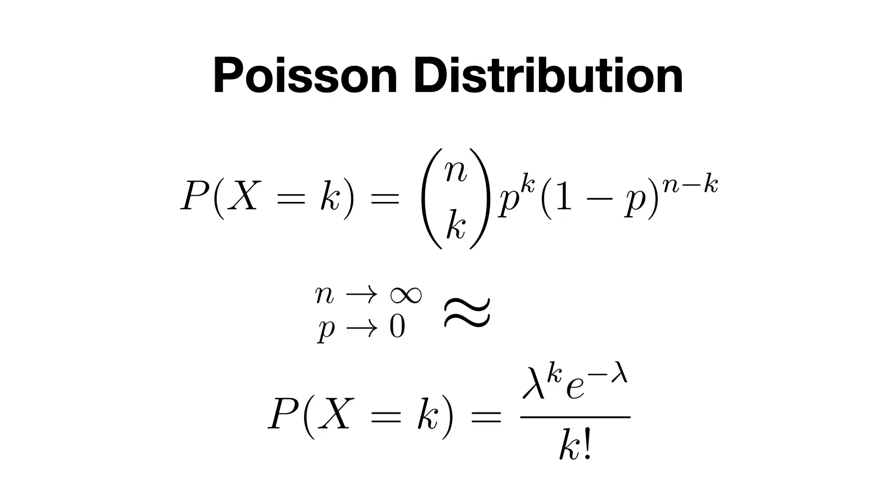And thus, we have derived the Poisson distribution which emerges as a limiting case of the binomial distribution and is applicable when we deal with rare events occurring in a large number of trials. One last thing I would like to talk about is how this function varies based on lambda, the average rate of occurrences.